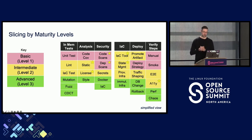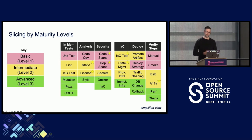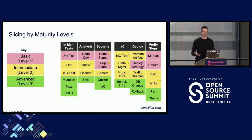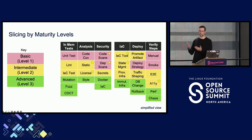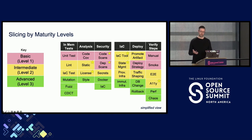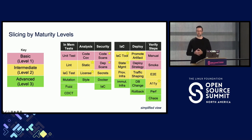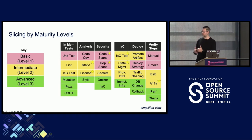Instead, we're going to slice it next by maturity levels — and perhaps confusingly, I've used the same colors reversed. Another way to think about this is a gradient, light blue to dark blue. If you or your team is new to CI/CD, you can start at the basic levels, get those things in place, then move on to intermediate, then advanced practices when you have those in place sufficiently. It's also important to note that not all teams and not all pipelines would need to go all the way — you probably want some sort of a rubric or coaching to know how far to go.